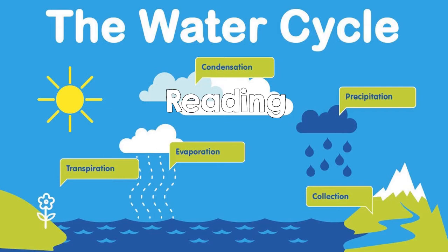The Water Cycle. Water covers most of the planet. It can be found in oceans, lakes, and ponds, and in the ground itself. The cycle of the water from liquid to vapor to solid is called the water cycle. The water cycle is an exciting and continuous process with no beginning or end.